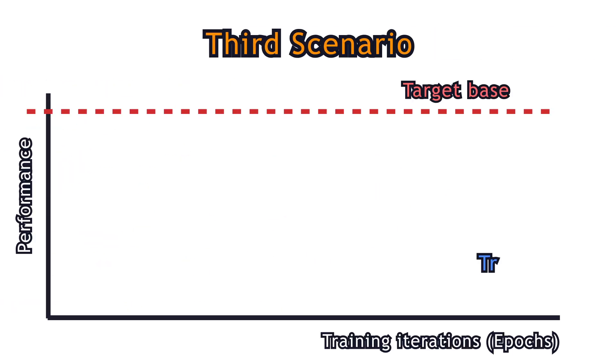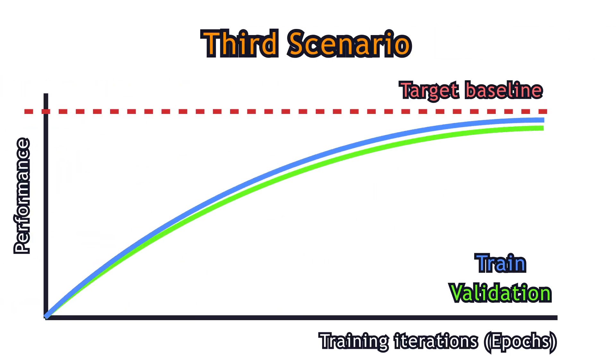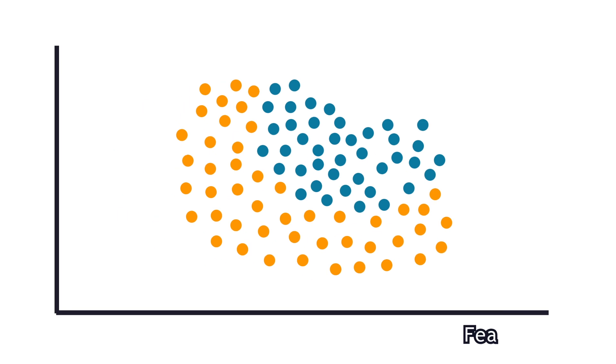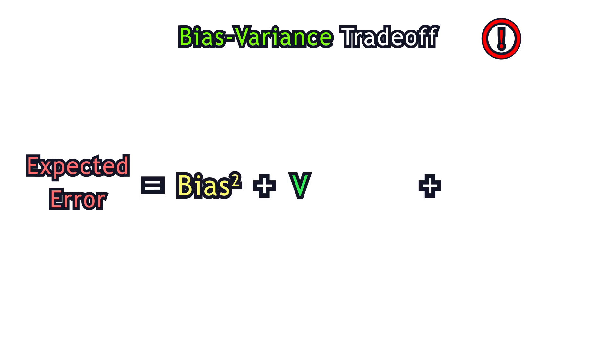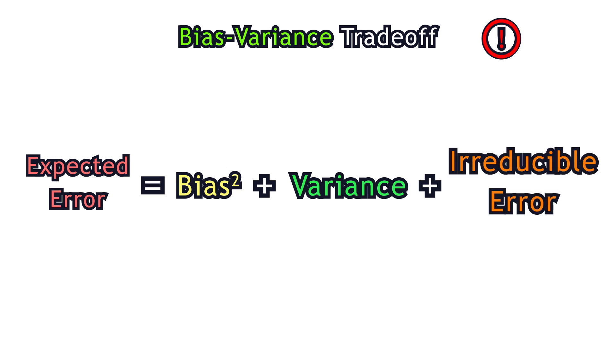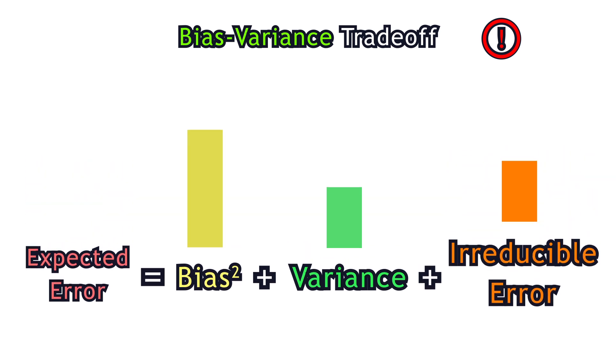The third case is when you see both sets performing well. This is the ideal case you want to observe in all your projects. There exists a concept of bias and variance tradeoff, which is important to know. The error of a model in machine learning can be decomposed into three parts: bias, variance, and irreducible error. When you decrease bias by making the model more complex, you typically increase variance.